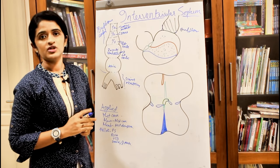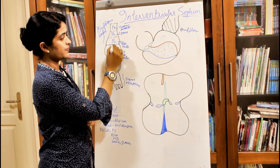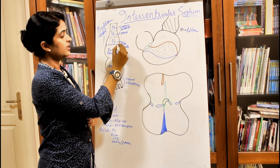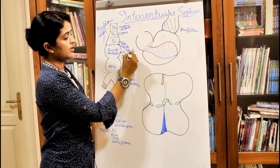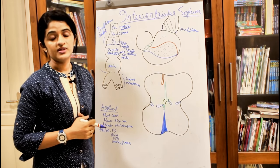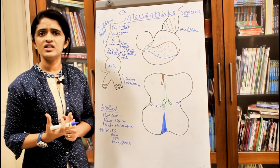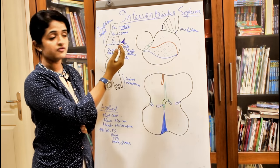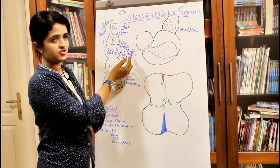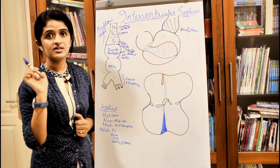Let's see how the interventricular septum is formed. There is a sulcus at the junction between the bulbus cordis and the primitive ventricle, known as the bulboventricular sulcus. In the adult heart, the bulboventricular sulcus forms the interventricular sulcus. It is called interventricular because the proximal one-third of the bulbus cordis forms the right ventricle and the primitive ventricle forms the left ventricle — so the sulcus between these two becomes the interventricular sulcus.